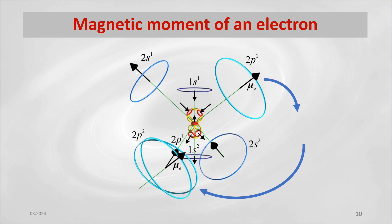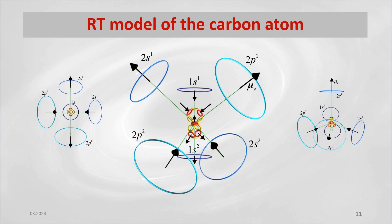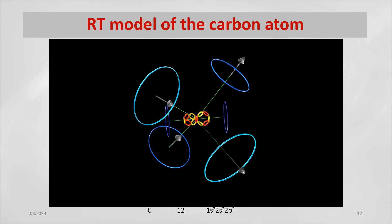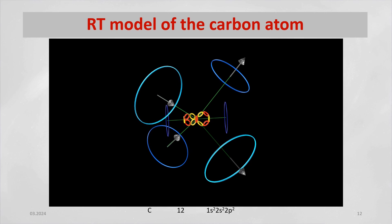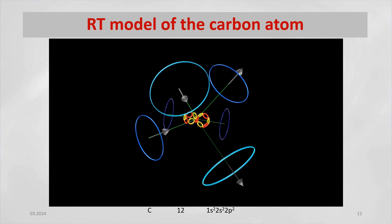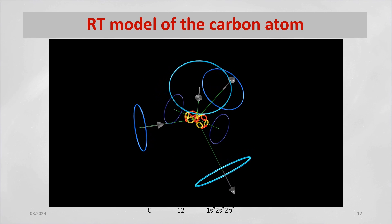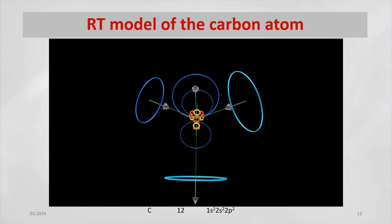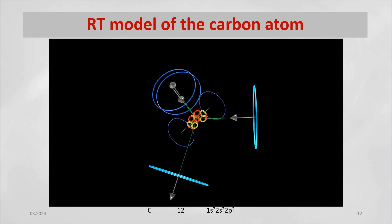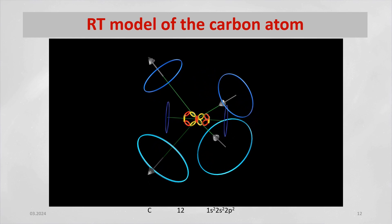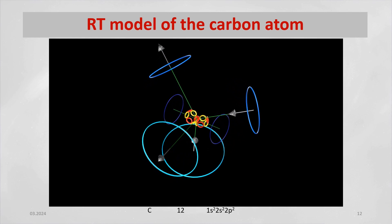It always has an anti-parallel direction to the magnetic moment vectors of its controlling protons. In the pictures, we can see different views of the schematic representation of the carbon atom models. A carbon atom can bond with another carbon atom through its 2p type electrons with opposite vectors of magnetic moments, and 1s type electron, and their combination.